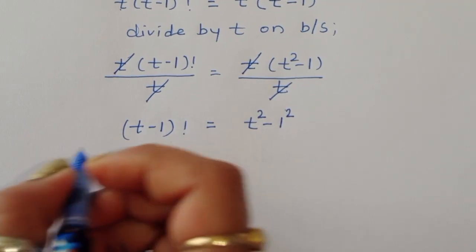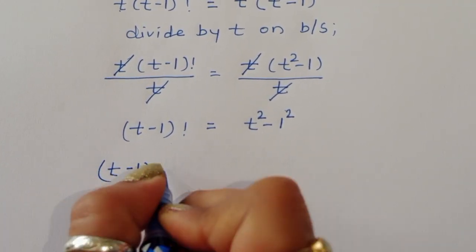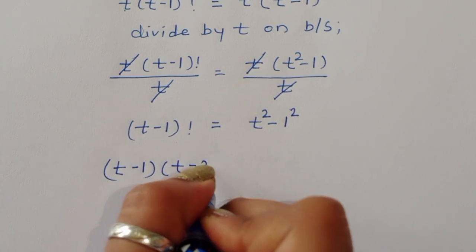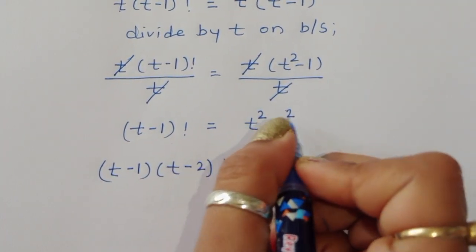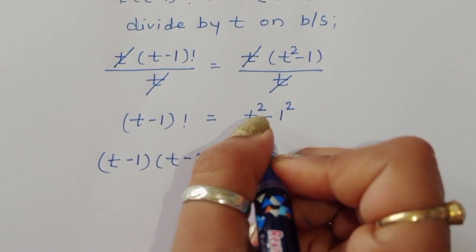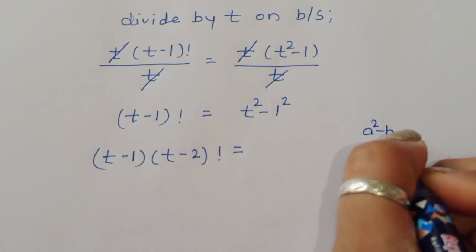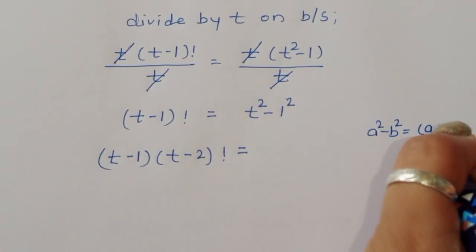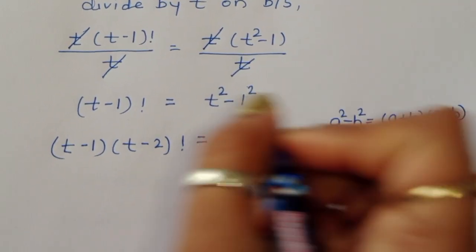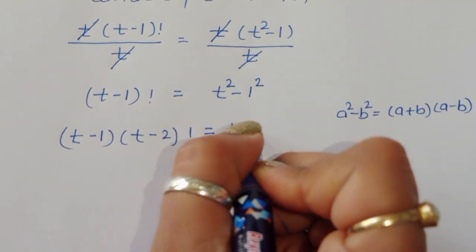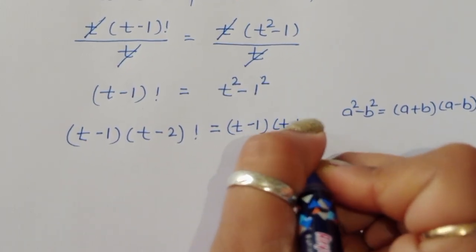Expanding (t minus 1) factorial as (t minus 1) times (t minus 2) factorial. On the right side, t squared minus 1 squared — using the formula a squared minus b squared equals (a plus b)(a minus b) — we write (t plus 1)(t minus 1).